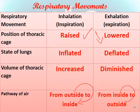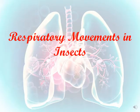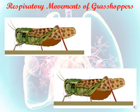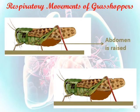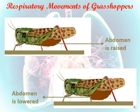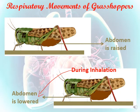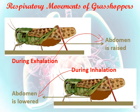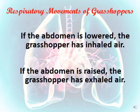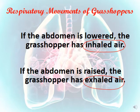Now let's talk about the respiratory movements in insects — specifically the grasshopper. In the first figure the abdomen is raised, while in the second figure the abdomen is lowered. During inhalation the abdomen is lowered, while during exhalation the abdomen is raised. So when the abdomen is lowered, the grasshopper has inhaled air, and when the abdomen is raised, the grasshopper has exhaled air.